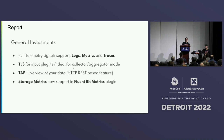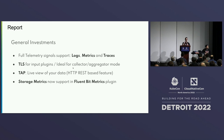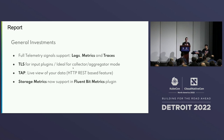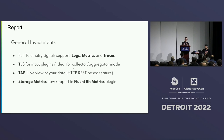FluentBit has a storage engine — not like a database, but it allows you to store data either in memory or on the file system, depending on how you want to handle the load. FluentBit internal metrics did not previously expose the storage metrics, but now you can flow those metrics as part of the pipeline. For example, you can ship FluentBit metrics through a Prometheus remote endpoint or OpenTelemetry metrics.